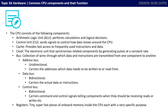So let's recap what you have learnt. The CPU consists of the following components: the arithmetic logic unit, which performs calculations and logical decisions; the control unit, that sends signals to control how data moves around the CPU; cache, which provides fast access to frequently used data and instructions; the clock, the electronic unit that synchronizes all related components by generating pulses at a constant rate; buses, collections of wires through which data and instructions are transmitted from one component to another; and registers, tiny superfast pieces of onboard memory inside the CPU, each with a very specific purpose.